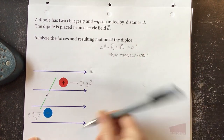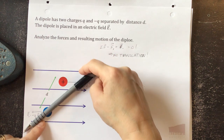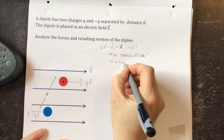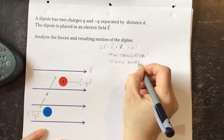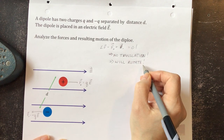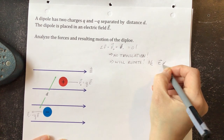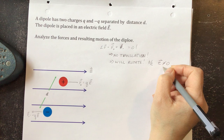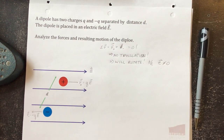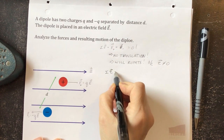Is that the full description though? The force on the top points right, the force on the bottom points left — this thing is actually going to rotate. Why does it rotate? It's going to rotate because the torque is not zero. This might remind you of the motor lab you did in physics 1051. So let's think about what is the net torque on our dipole.